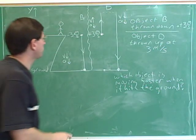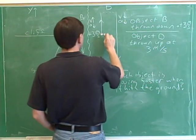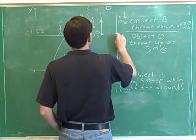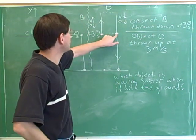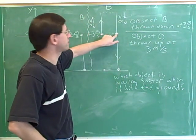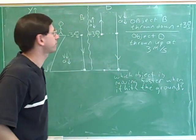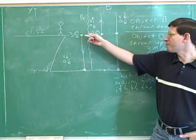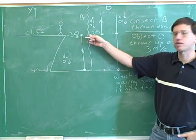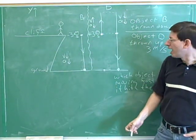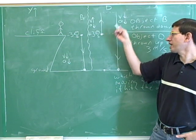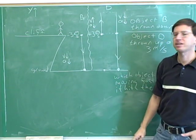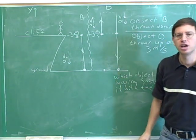The key to solving this problem is to ask yourself: what was the velocity of object D when it got back to the height of the cliff? We know that when object D left the cliff going up, it was going at three meters per second upward. Eventually it's going to get back to that same height, so what's going to be its velocity when it gets back to that same height?